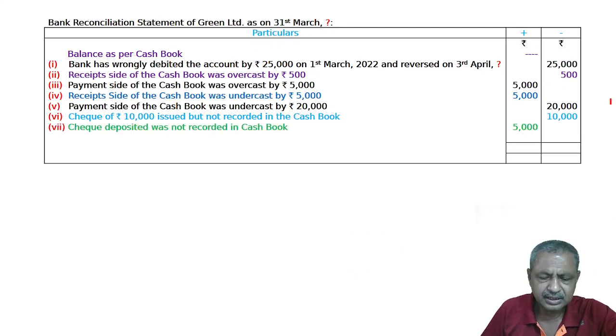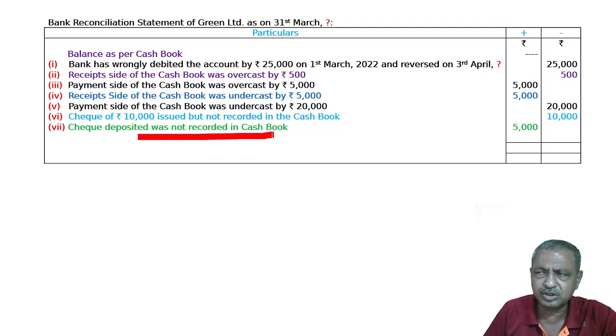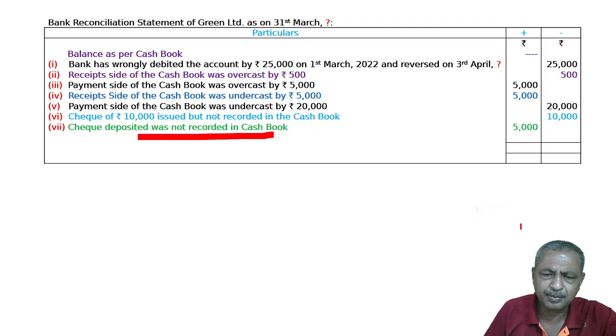Seventh: a check deposited was not recorded in the cashbook. The check deposited should have increased the cashbook balance on the receipt side, but since it was not recorded in the cashbook, the cashbook balance was not increased. So we add it.